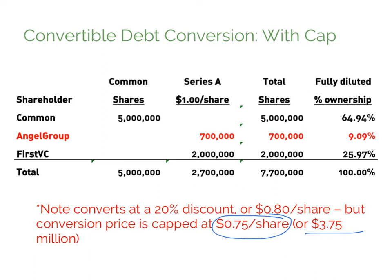So with the cap, the $525,000 in principal plus interest purchases 700,000 shares of Series A, and our angels own 9.09% of the company.